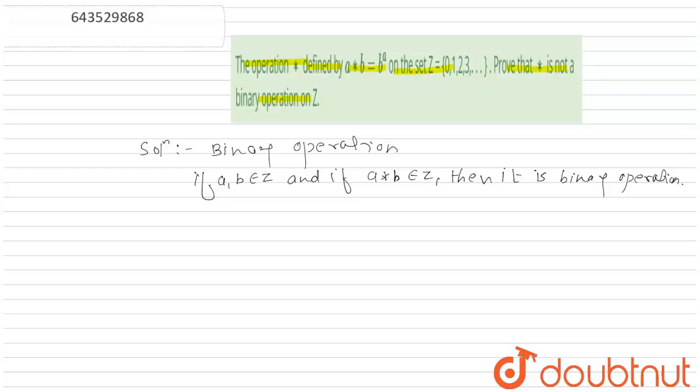So here Z is given, Z is equal to 0, 1, 2, 3, 4, and so on.